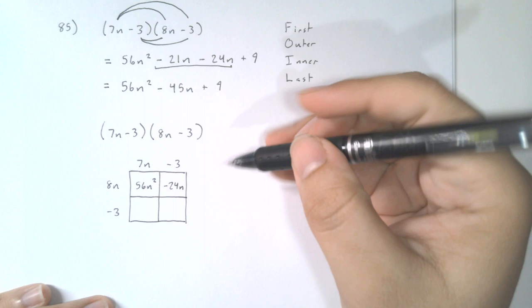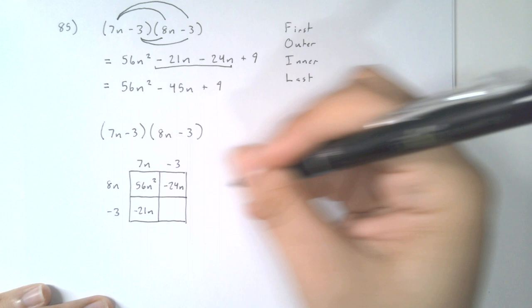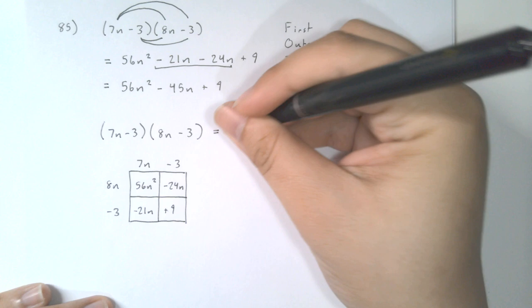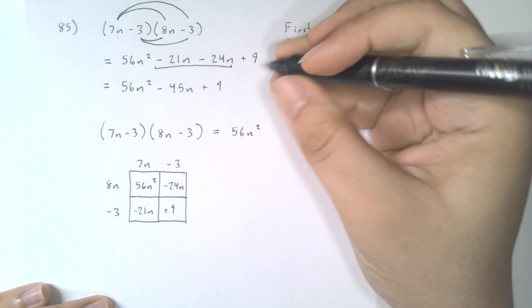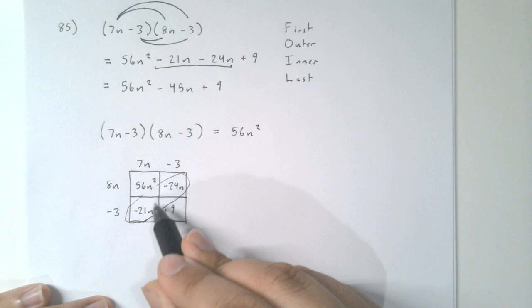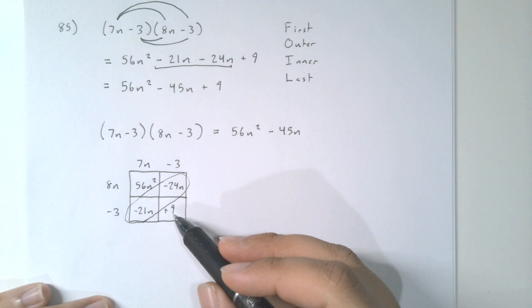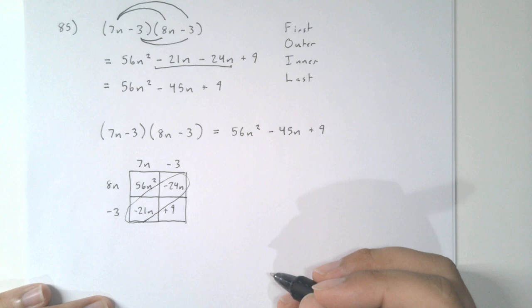8n times negative 3 is negative 24n. 7n times negative 3 is negative 21n. Negative 3 times negative 3 is plus 9. When we add all of this together, we have 56n squared, and along the diagonal we have those two terms that group together giving us minus 45n, and lastly plus 9. We still get the same answer.